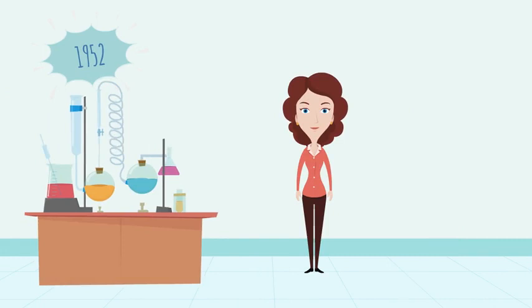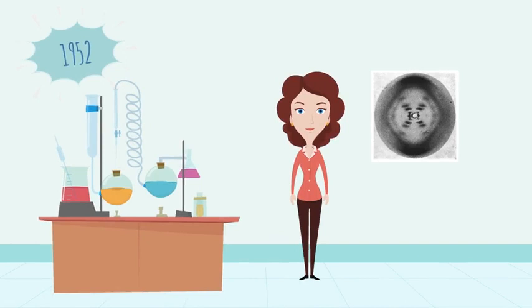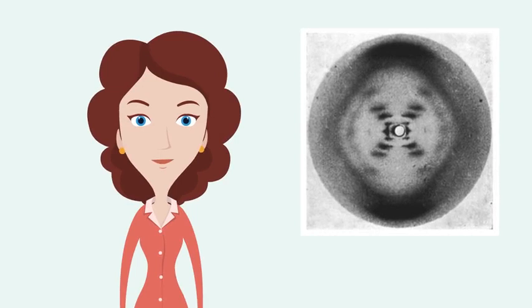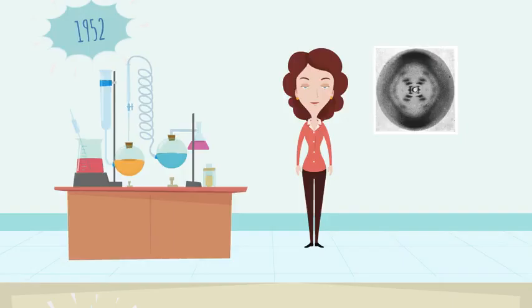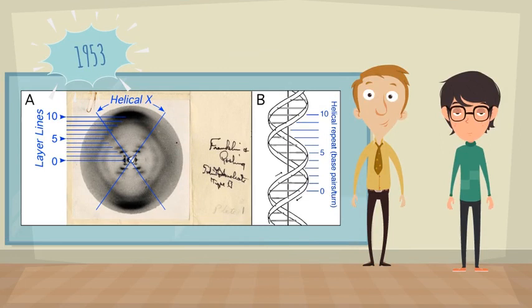Next, Rosalind Franklin provided an important clue for the structure of DNA with an X-ray photo of DNA. According to the picture, DNA had an X shape. Franklin's X-ray diffraction image strongly implied a helical structure for DNA.